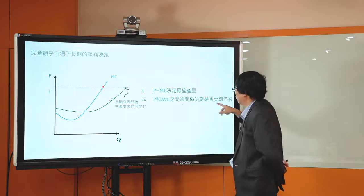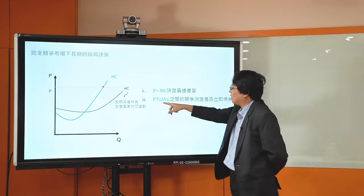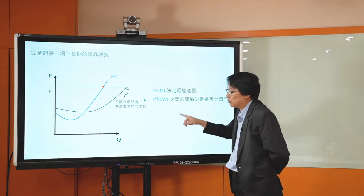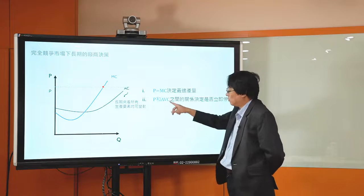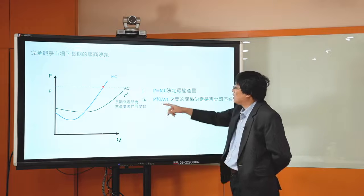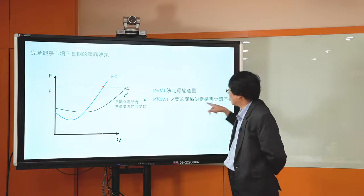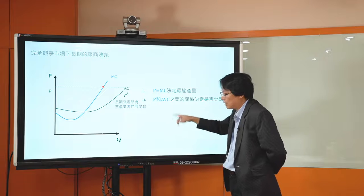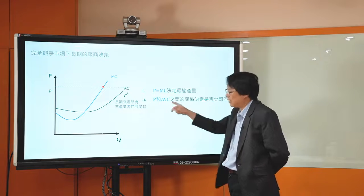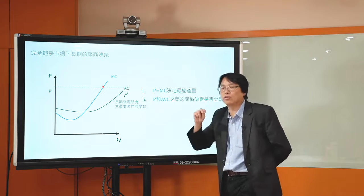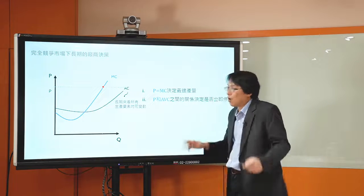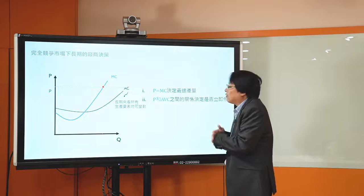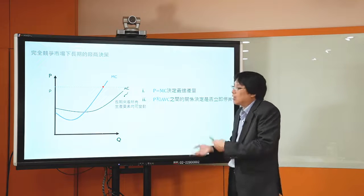一样在P等于MC这个条件下决定最适产量。MC当然也不大一样了，因为平均成本线已经不大一样，所以边际成本线也不大一样。可是还是有类似这样的结构：在长期做决策的时候，还是用P等于MC决定最适产量，还是看P跟平均成本的关系来决定是否停业。在长期的时候平均变动成本就是平均成本，所以看价格跟AC之间的关系来决定是否停业。